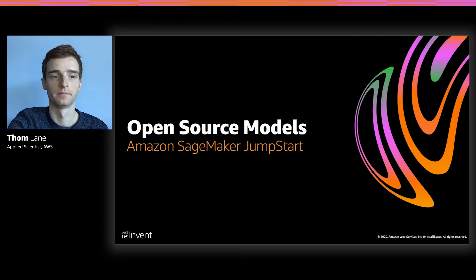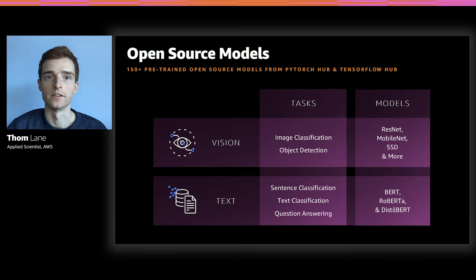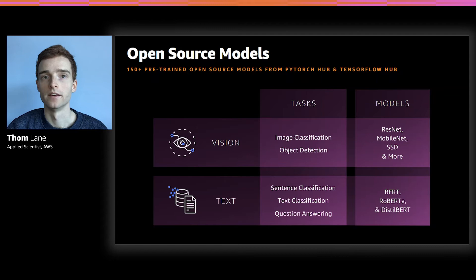Starting with the open source models. Open source models can be incredibly powerful because they've already been trained on large datasets, and over time their performance has just got better and better. We include over 150 pre-trained models in Jumpstart that cover the vision and text domains. Models like ResNet and MobileNet can be used for image classification, and SSD and EfficientNet can be used for object detection.